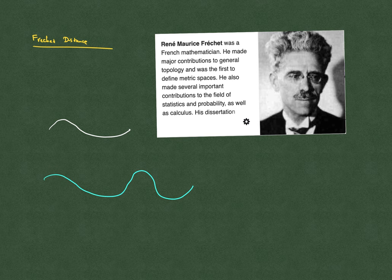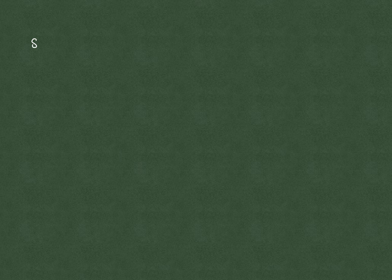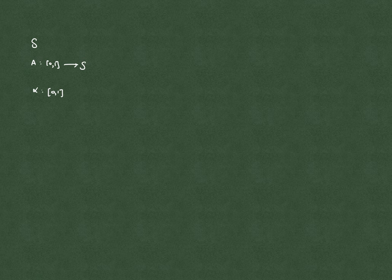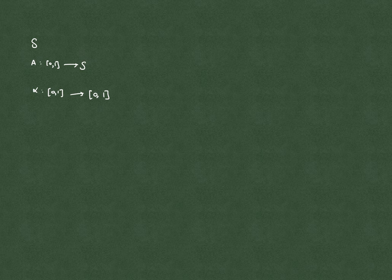Their speed does not have to be constant, so they can vary their speed throughout the path. The Fréchet distance has to do with the traversal between these two curves, and specifically the shortest leash length sufficient for both of them to traverse their separate curved paths from start to finish. Using Wikipedia's notation: let S be a metric space, so a curve A in this space is a continuous map from [0,1] to S. A reparameterization alpha is a non-decreasing surjection from [0,1] to [0,1], which preserves ordering while allowing varying speeds.